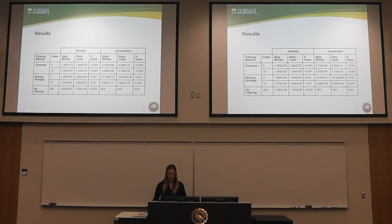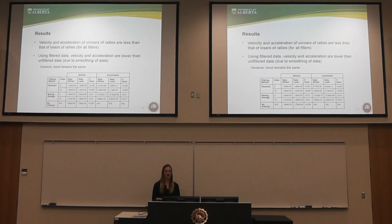Moving on to results: we determined that the velocity and acceleration of winners of rallies are less than that of the losers for all filters. Using the filtered data, the velocity and acceleration values were a little bit lower than the unfiltered data due to the smoothing, but the trend remains the same for all sets — the velocity and acceleration of winners is consistently less than that of losers.